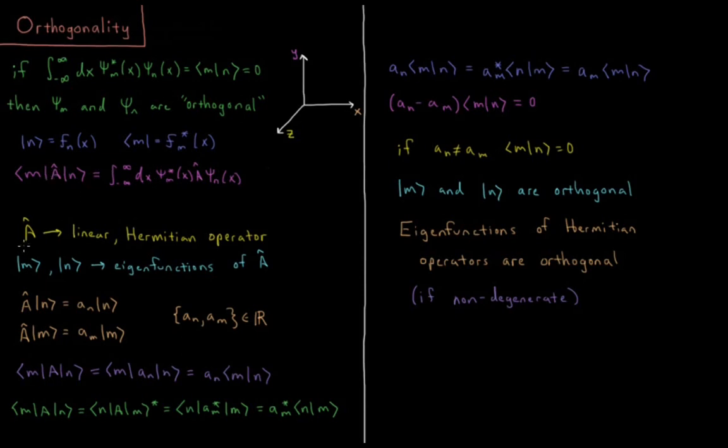So let's start off by saying that this operator A is going to be some linear Hermitian operator. We have the ket vectors |m⟩ and |n⟩. Those are going to be eigenfunctions of A.